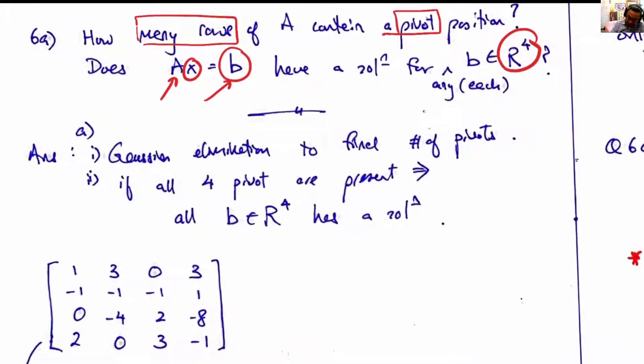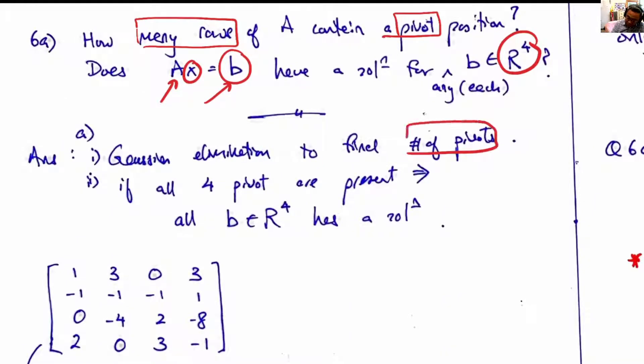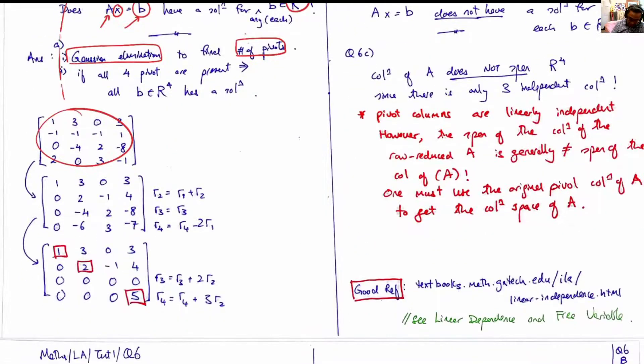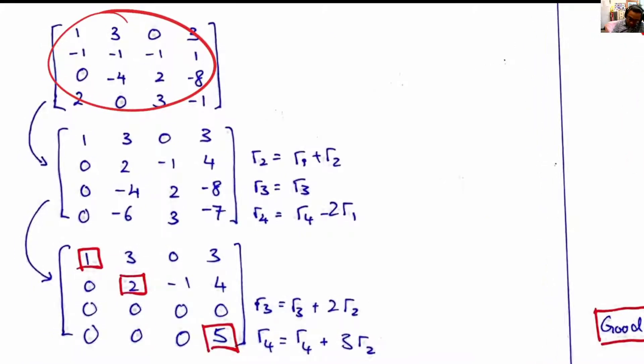Let's go about doing this. To find the number of pivots, we immediately apply Gaussian elimination. We copy A here and begin.